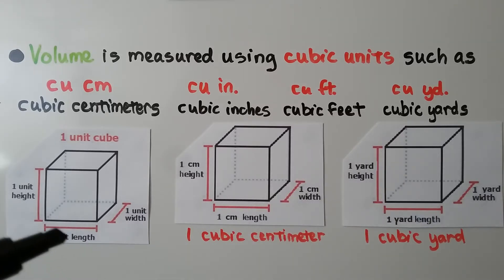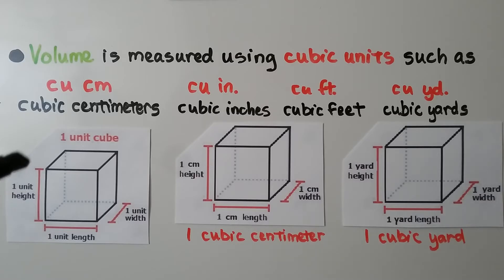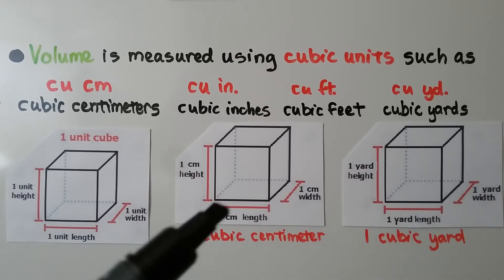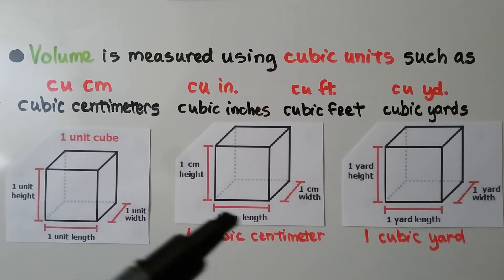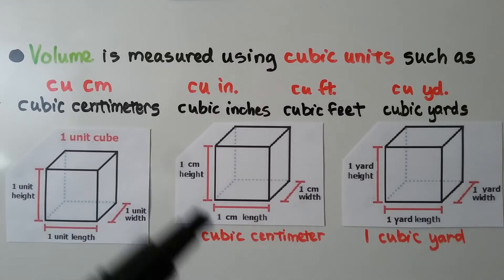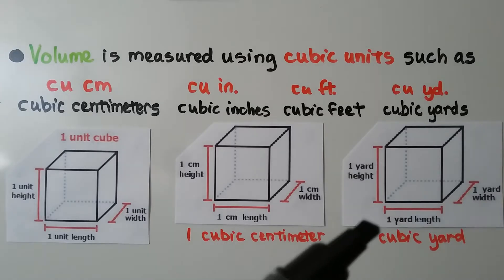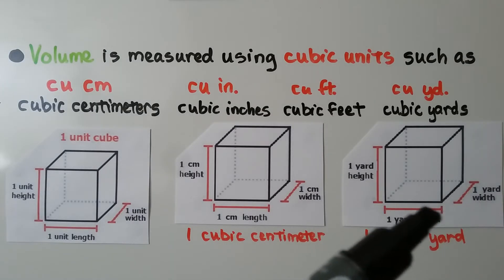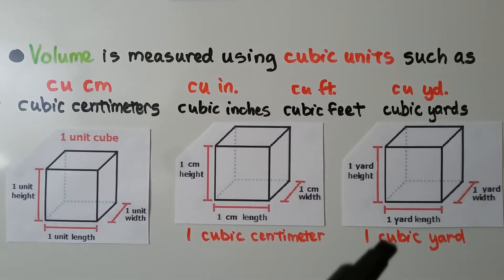A unit cube has unit length, unit width, and unit height. If the units were centimeters, it would be 1 centimeter length, 1 centimeter width, and 1 centimeter height — that would be 1 cubic centimeter. If the units were yards, it would be 1 yard in length, 1 yard in width, and 1 yard in height — and it would be 1 cubic yard.